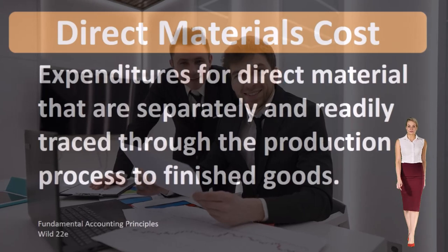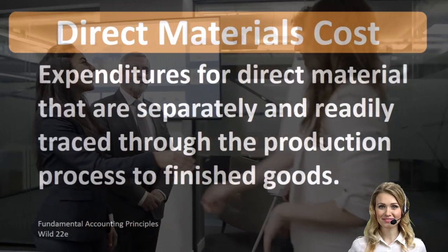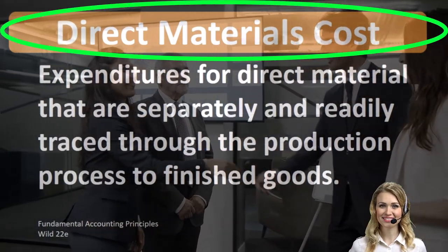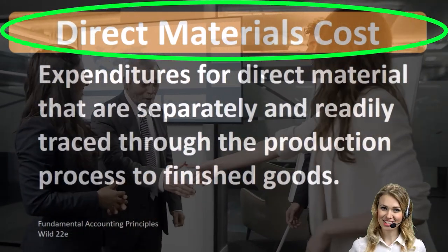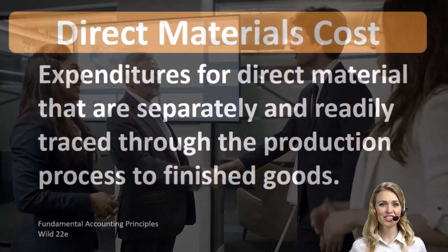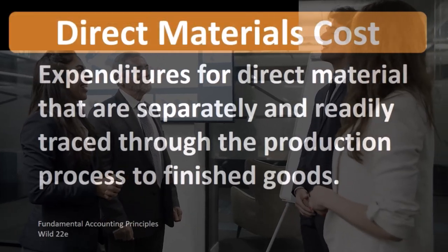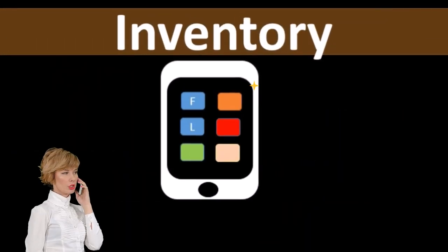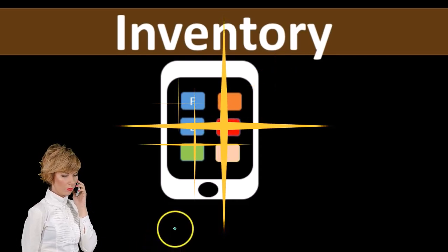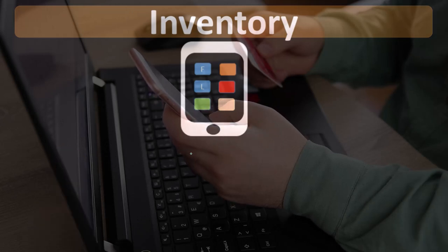When we're talking about direct materials costs, we're typically talking about a company that manufactures inventory and whether or not we can apply the direct materials to that process. The production of inventory usually takes place in the form of a job cost system or a process cost system. For example, if we were making tablets such as this, we would need to apply the costs to that tablet.